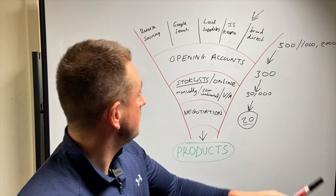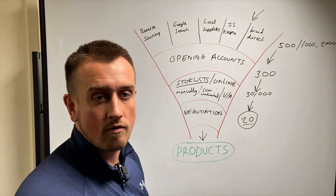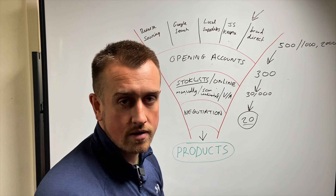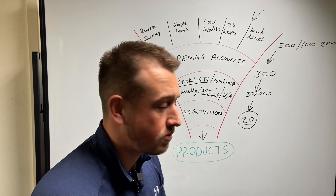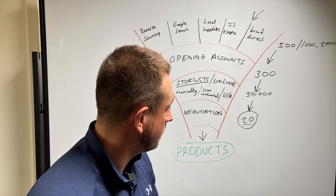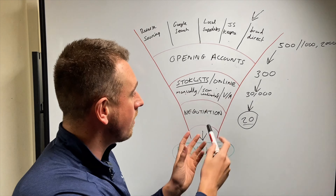Typically what will happen is someone will say wholesale isn't working, I can't find any products — they would have found five suppliers, opened two accounts, gone over 300 products, and said they didn't find anything. Now obviously this isn't easy. This takes time. But once you know what you're doing and all you do is this over and over again, you're going to find products. There's no way you cannot find any products if you do this properly.